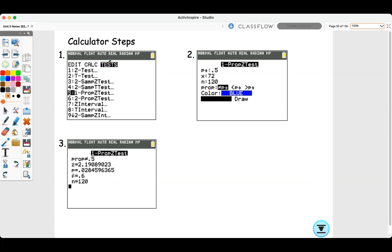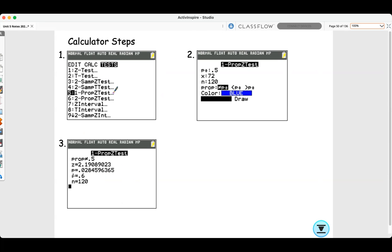So you go to stat, choose test, choose number 5, one proportion Z test. Our proportion is 0.5. Our number of successes is 72. N was 120. We are doing not equals this time. When we calculate this, we get a Z value of 2.19, a P value of 0.0285. Our proportion we have is 0.6.